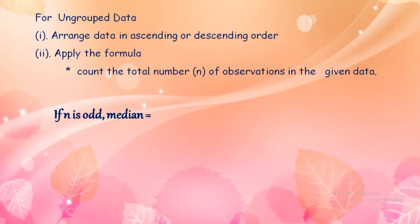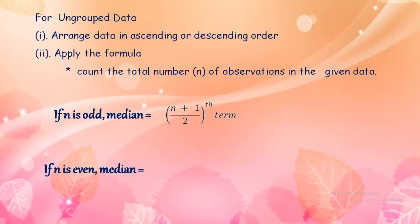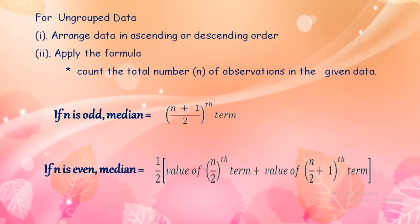If the number of observations n is odd, then the median will be the (n+1)/2 th term of the arranged data. If n is even, then the median will be one-half of the value of the (n/2)th term plus the (n/2 + 1)th term — that is, we find the mean of those two middle terms.